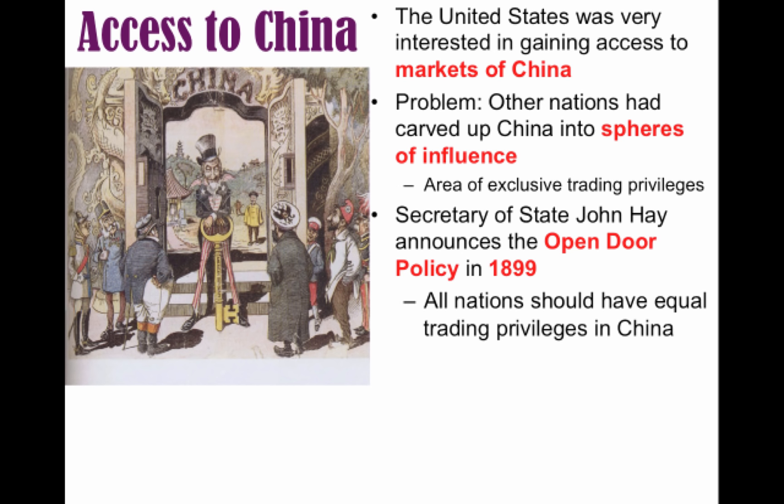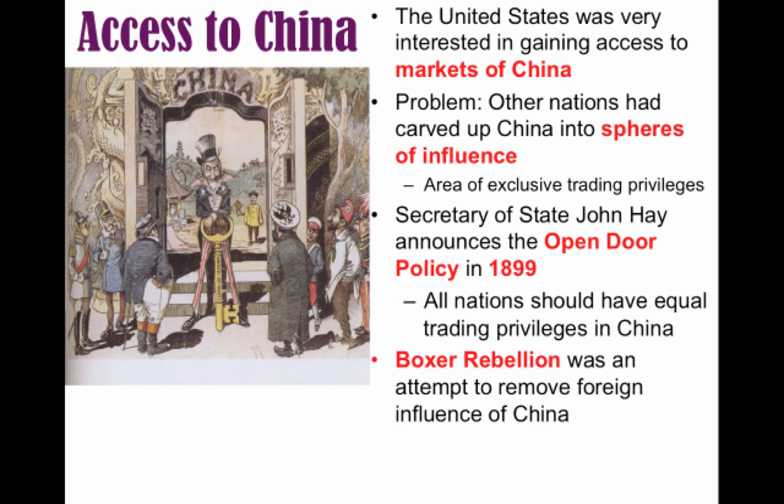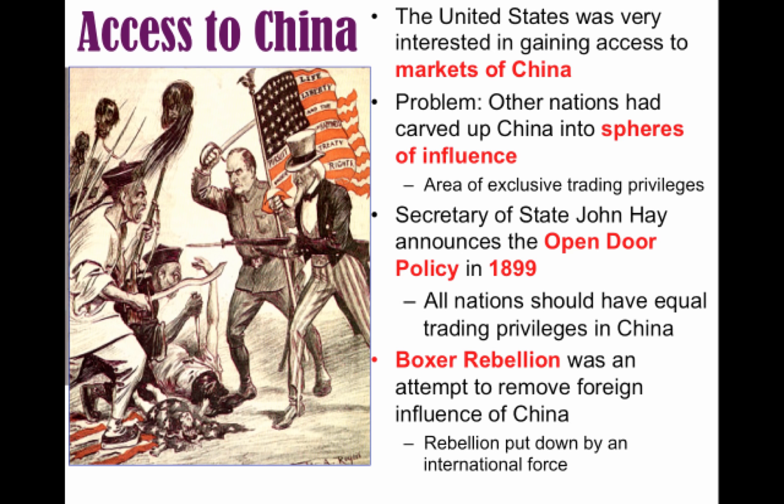There was a lot of resentment among some Chinese over all this foreign intervention. In the 1890s, the Boxer Rebellion was an attempt to remove foreign influence from China. Foreign offices were attacked and Chinese Christian missionaries were killed. Eventually it was put down by an international force, including the United States and other nations — the Boxer Rebellion was crushed.